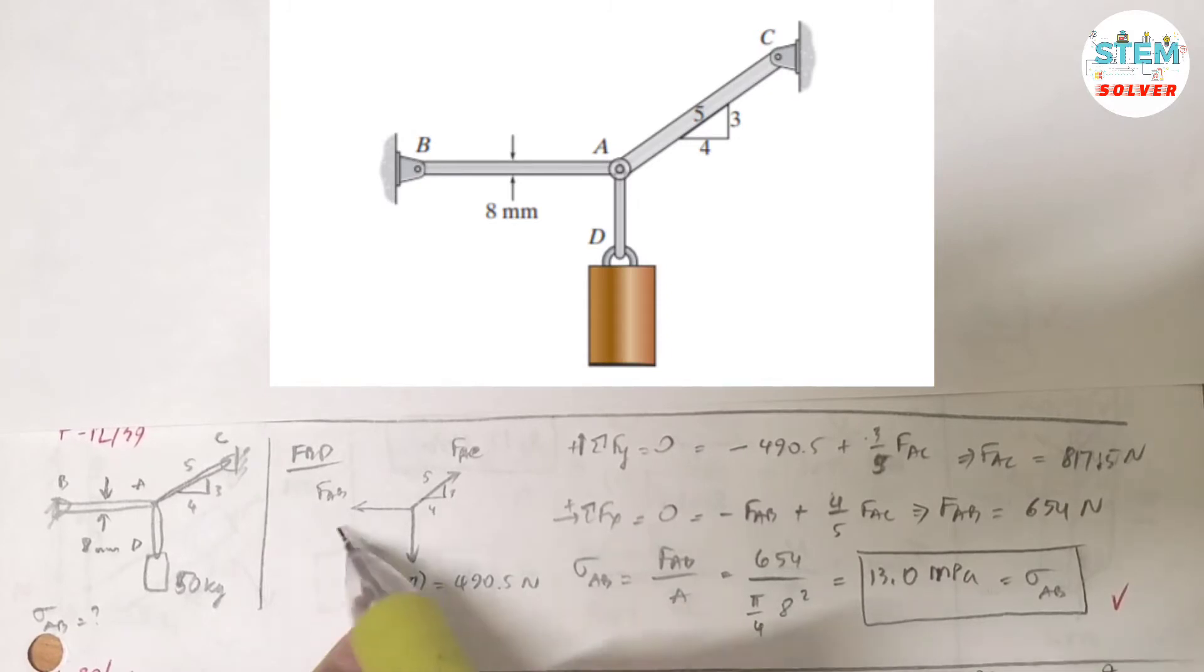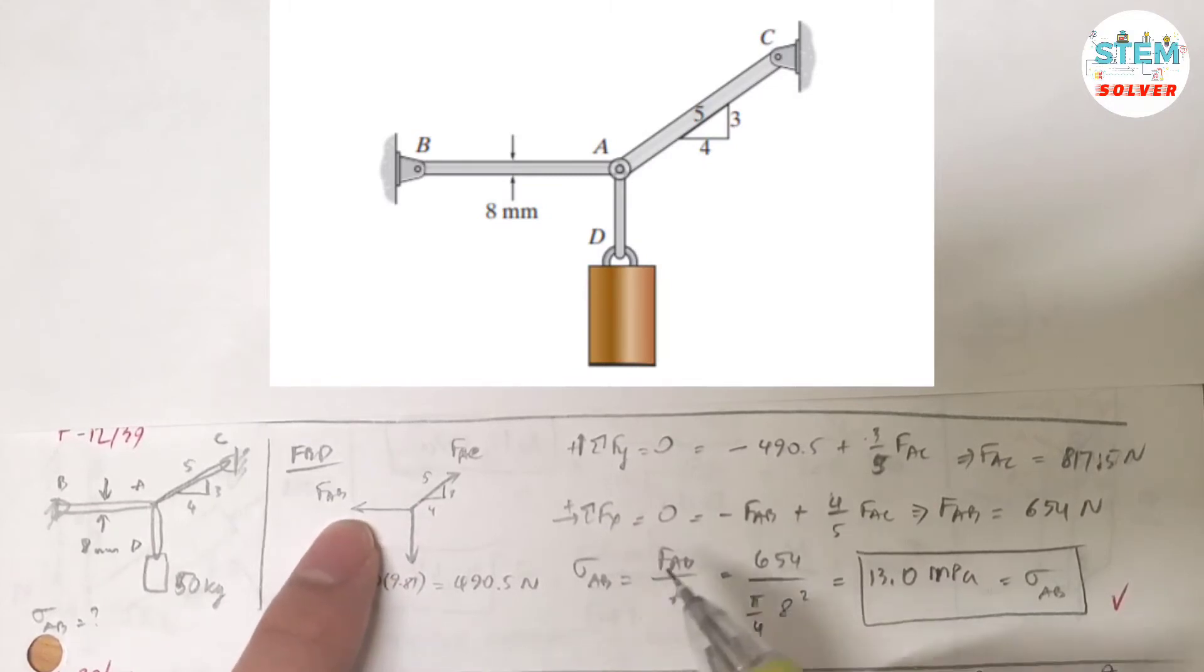You have a force to the left and a force AC upward to the right. In order to find the normal stress in this rod, you need to find the force in this one. Let's say you have this force down.